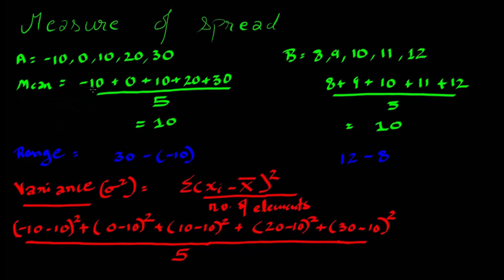Now let's calculate the mean. Mean is the sum of all elements divided by the total number of elements, which comes out to be 10 for data set A. Similarly, it also comes out to be 10 for set B.